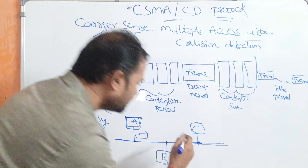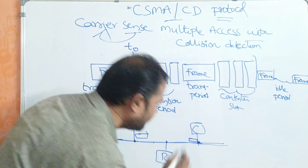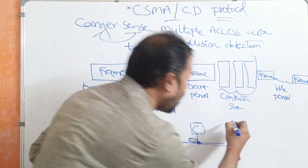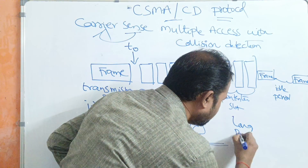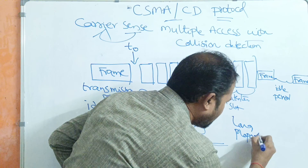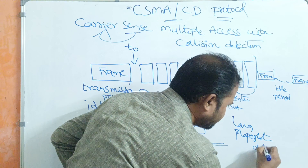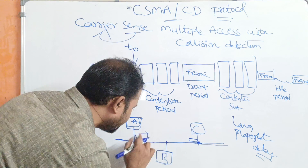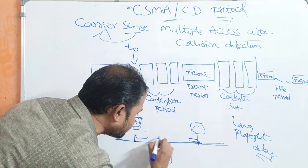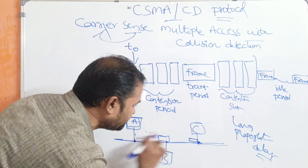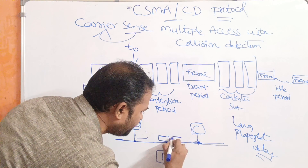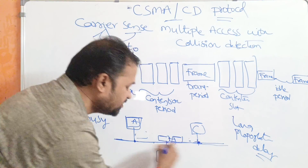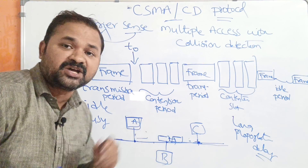So what will happen now? C can also transmit data. There is a long distance between them, so there is a long propagation delay. Propagation delay means if we have a longer distance, there will be some delay. Let us assume that during the middle of the transmission, these two frames collide with each other — so we get a collision, at station B we get the collision.